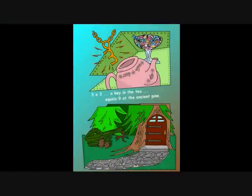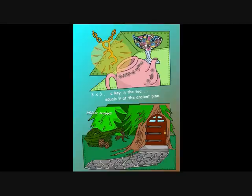And while they were at her house eating the blue goo, strange things began to happen — like the key in the T shaped like the number three. And behind auntie's house were the ancient pines, whispering, 'This way, this way.' So they took the key to the ancient pine and opened the door. Three times three, the key in the T, equals nine by the ancient pine.